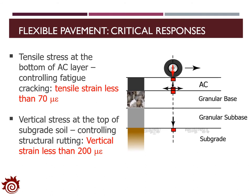The tension and compression identified earlier is very important for flexible pavement design. They help identify the tensile stress and vertical stress applied to the asphalt concrete layer and the subgrade. The tensile stress at the bottom of the AC layer is very important for identifying fatigue cracking — the tensile strain should be less than 70 microstrain (where 1 microstrain = 10⁻⁶ m/m). The vertical stress at the top of the subgrade soil is also very important for structural rutting; the vertical strain should be less than 200 microstrain.